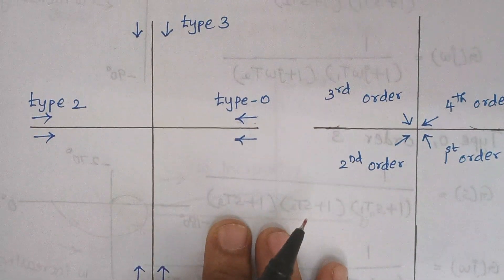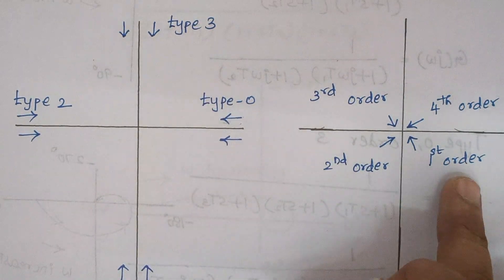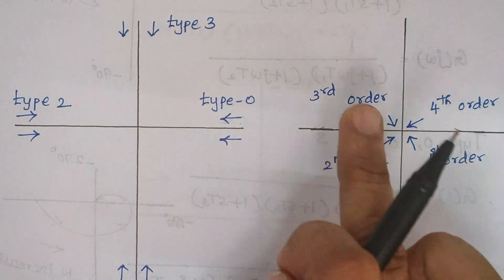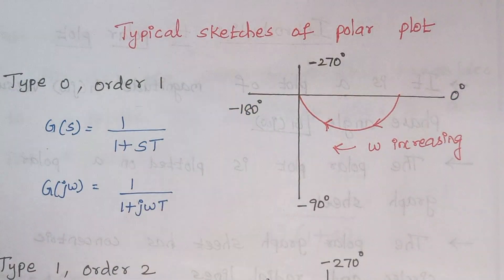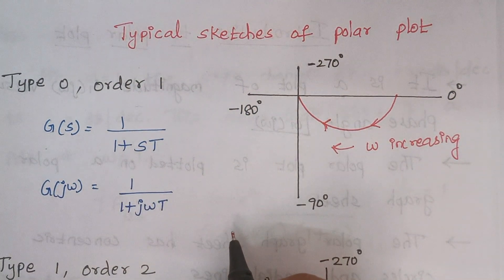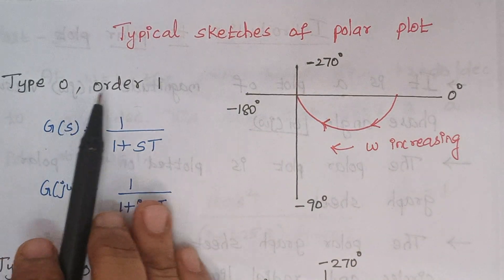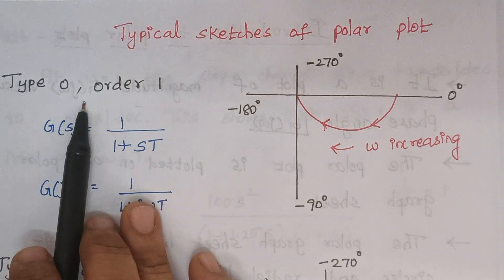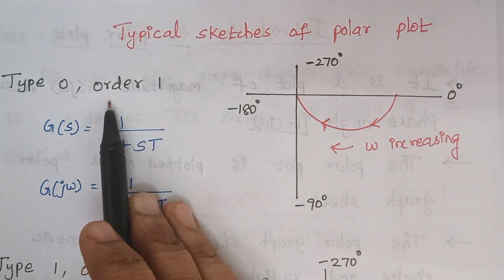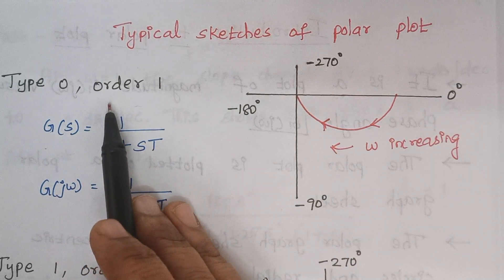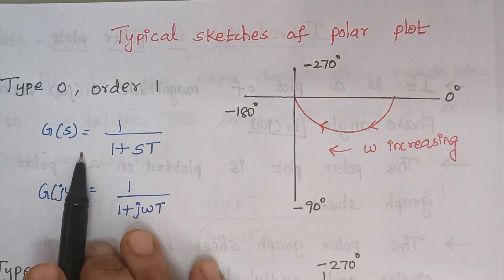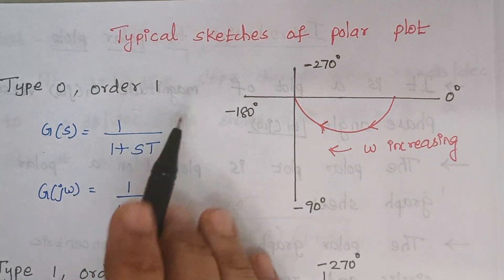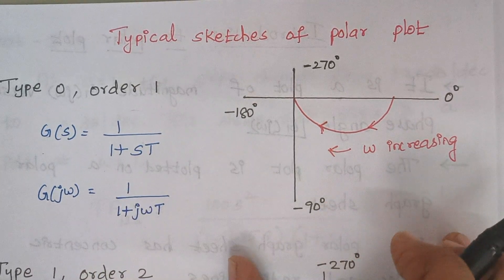We have type 0, type 1, type 2, and type 3, and for the order we have first, second, third, and fourth order going in a clockwise direction. The order is the maximum power in the denominator, and the type is the number of poles lying at the origin — that is, the individual s terms in the denominator. For example, with no individual s term, type is 0, and if the maximum power of s is 1, the order is 1. For a type 0, order 1 system, the polar plot will start and end at specific positions.